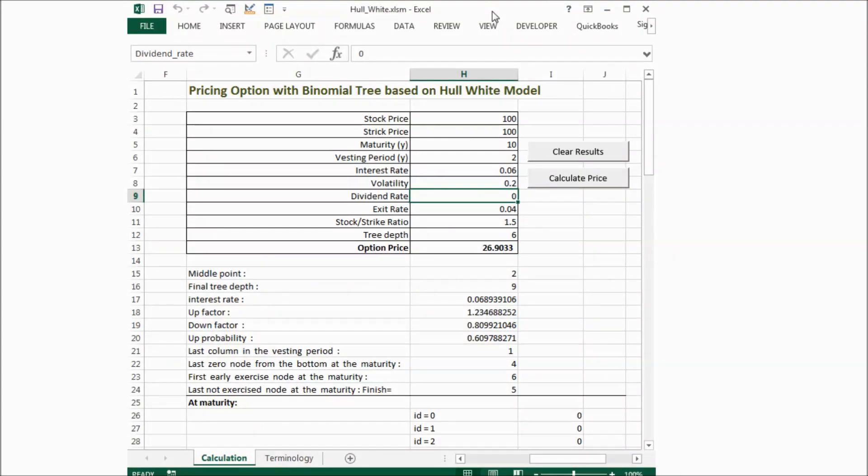Now let's go to my spreadsheet where I implemented this model. First of all, we have to decide all the parameters we need in this model. Stock price, we put 100, strike price 100, maturity within 10 years, and the vesting period is 2 years.